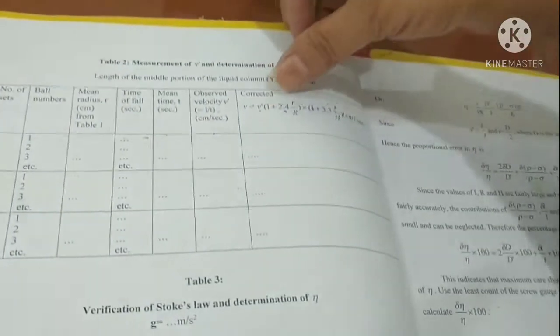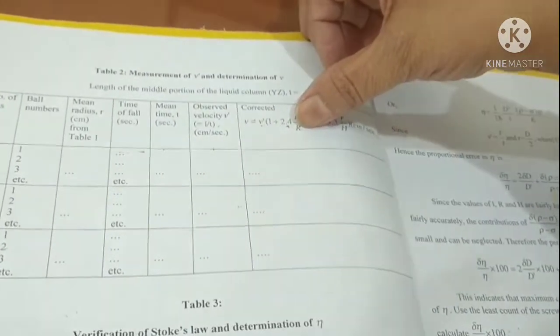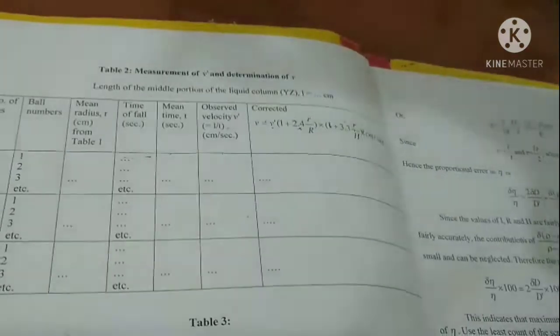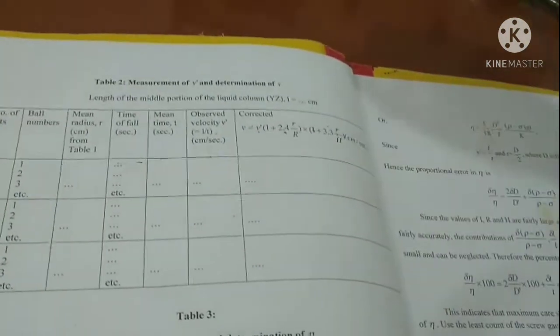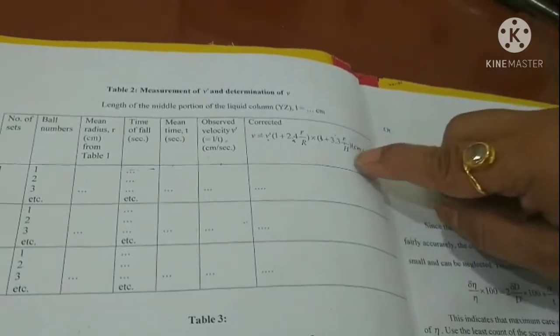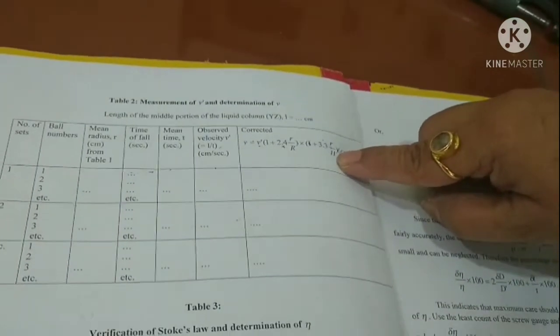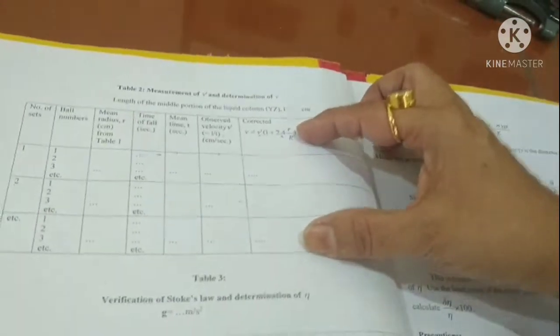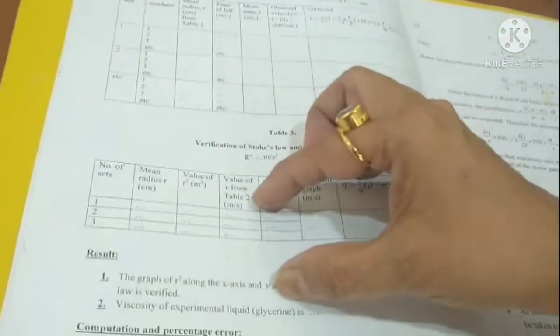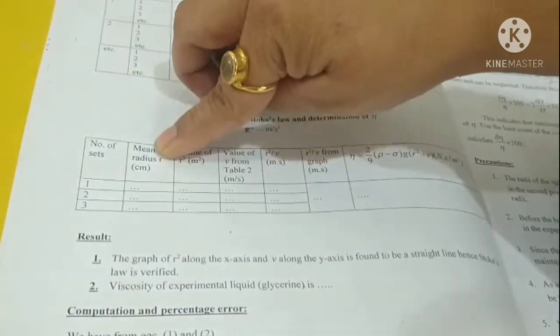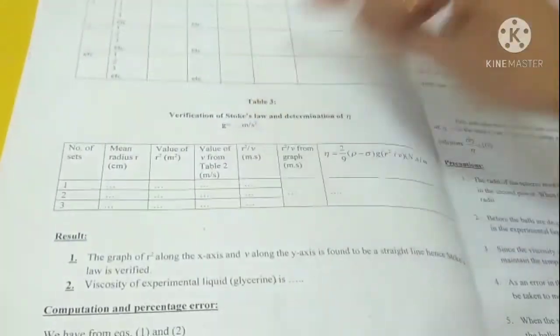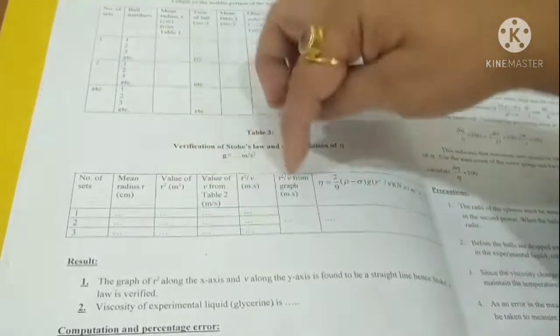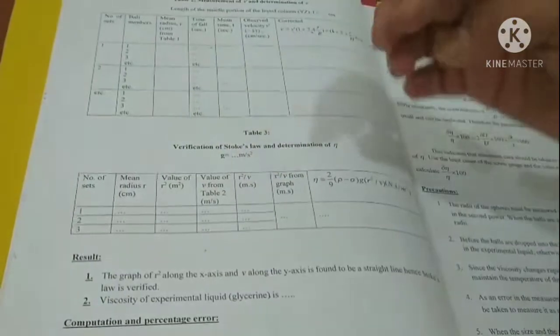We calculate this. For this, we know the radius, internal radius of the column. H is the height below which we measure the distance and time. These two corrections are done. When we have this set of velocity, we make another table in which we write the mean radius, corresponding R square and the velocity which we got. Then a plot between V and R square is done.